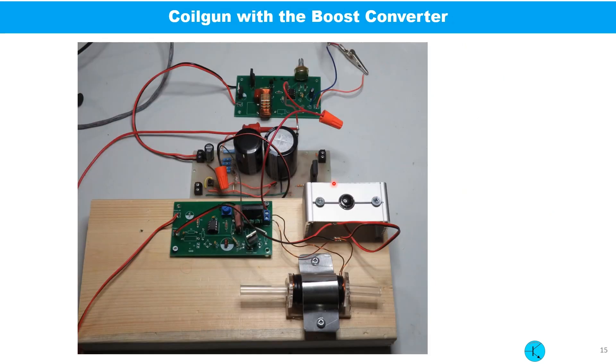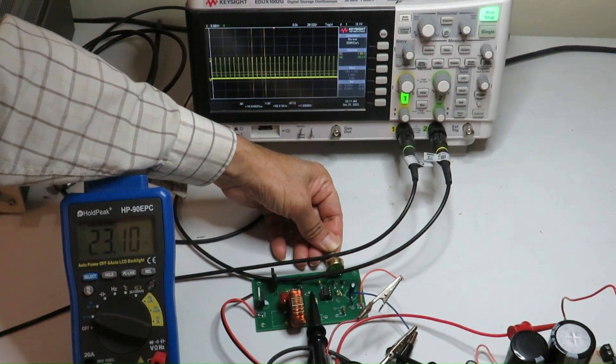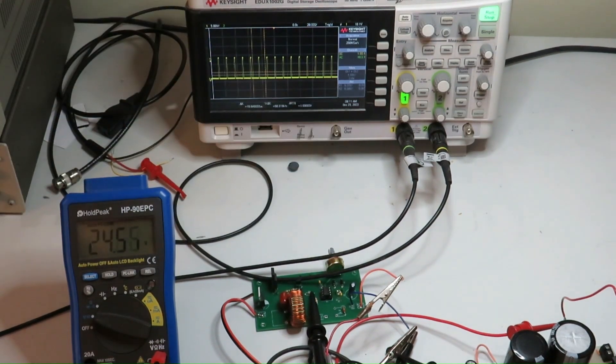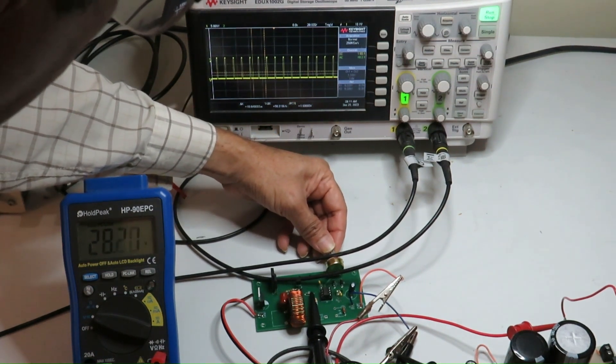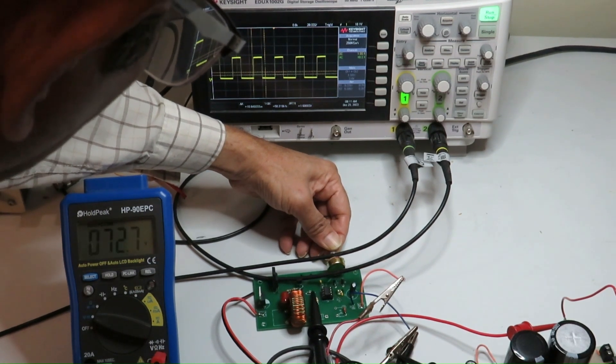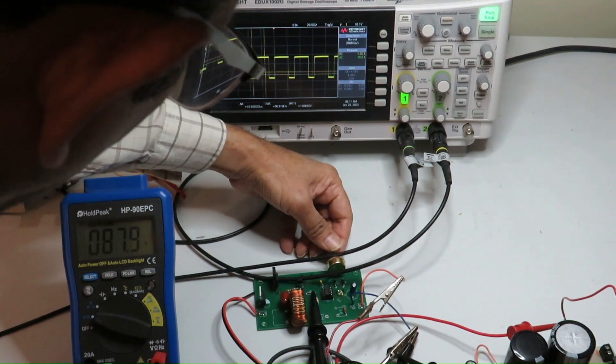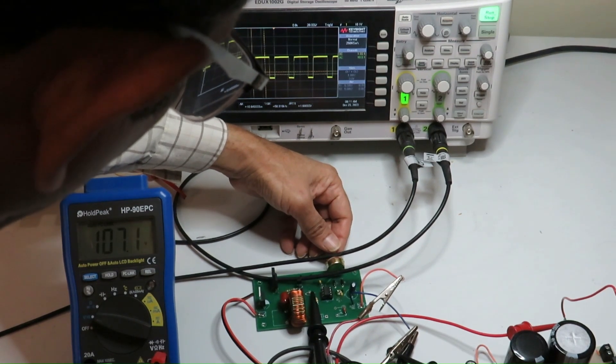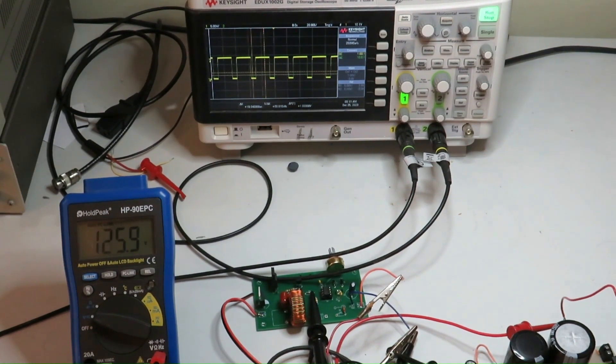This is the whole coil gun system shown with the boost converter replacing the old power supply. The boost converter circuit is connected with a 12 volt supply and you can see the output voltage on the voltmeter and also the output of the 555 timer is connected with the oscilloscope. You can see the PWM signal and by changing the potentiometer the duty cycle can be changed. You can see on the screen the output voltage is also going up fast.